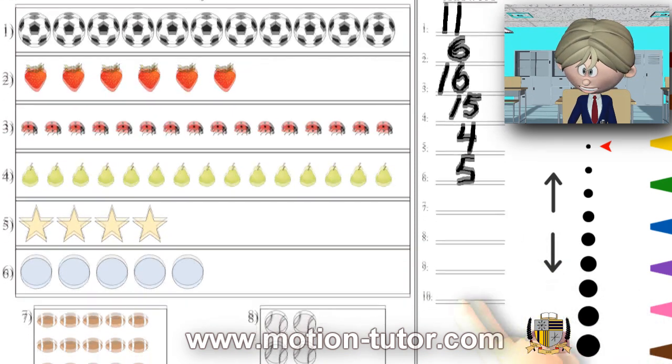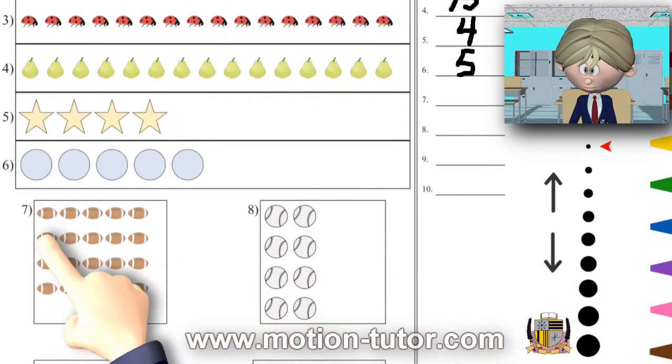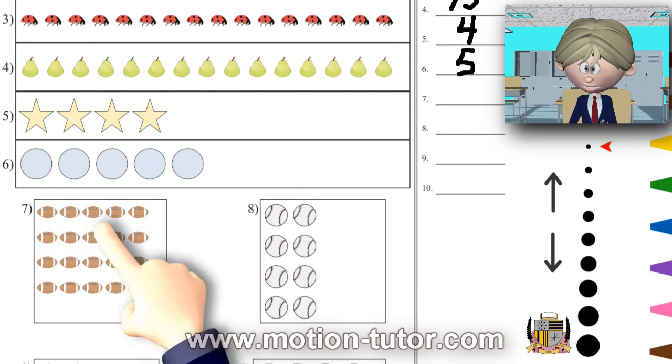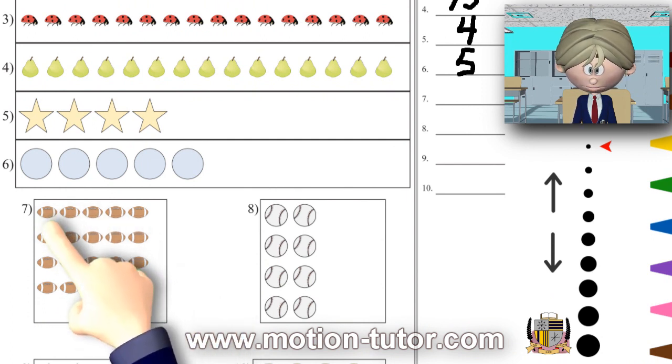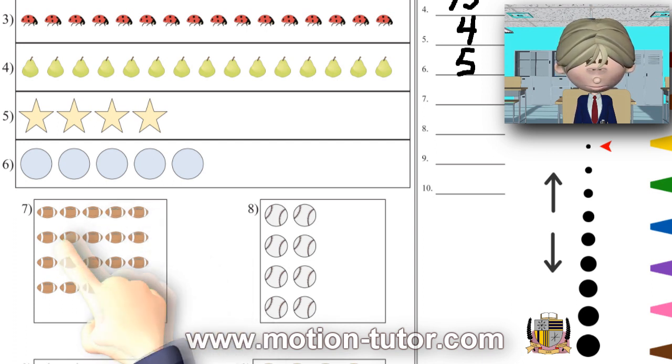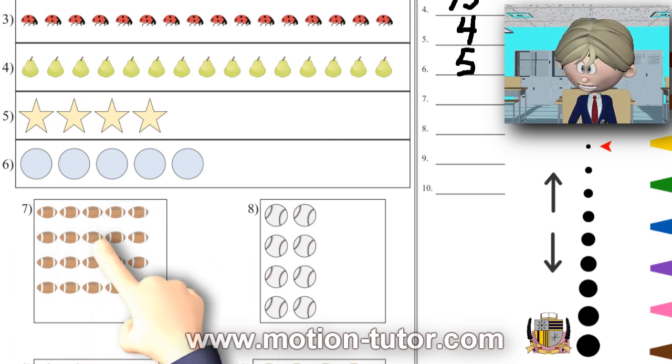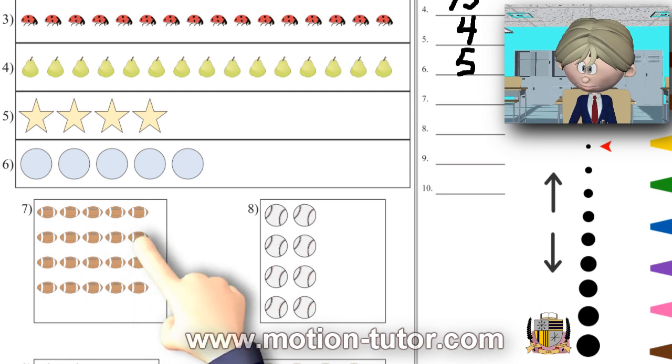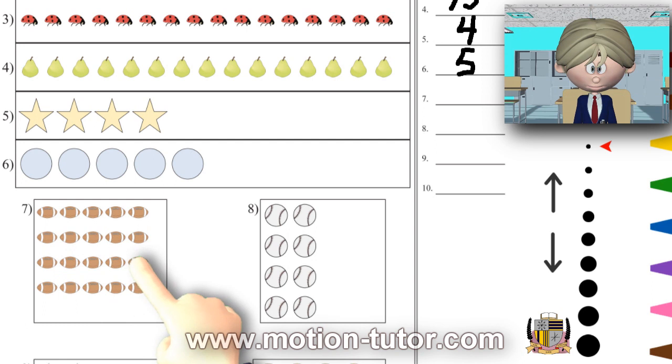Okay, we'll scroll this down a little more. Now I see some footballs over here. Now let's count them. One, two, three, four, five, six, seven, eight, nine, ten, eleven, twelve, thirteen, fourteen, fifteen, sixteen, seventeen, eighteen, nineteen, twenty. Twenty footballs.